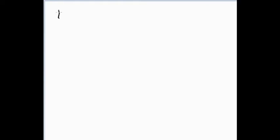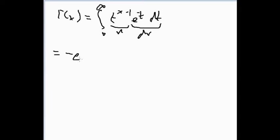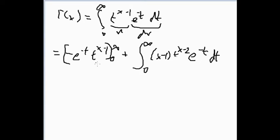OK, so we have gamma x is this integral. So basically we just integrate this by parts, with this as u and this as dv. So we just get minus e to the minus t, t to the x minus 1, from 0 to infinity, minus the integral of 0 to infinity, minus e to the minus t, times du, so x minus 1, t to the x minus 2. So the minuses cancel, so we get a plus.